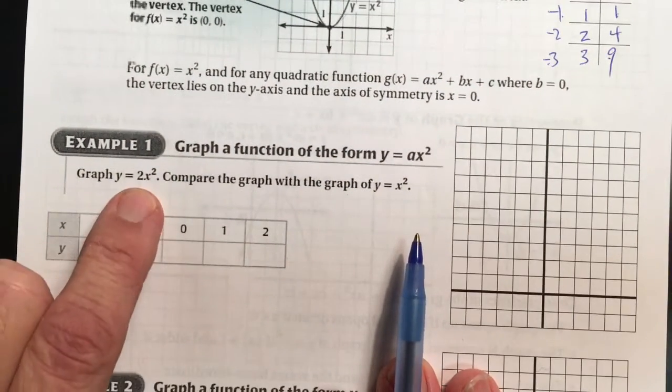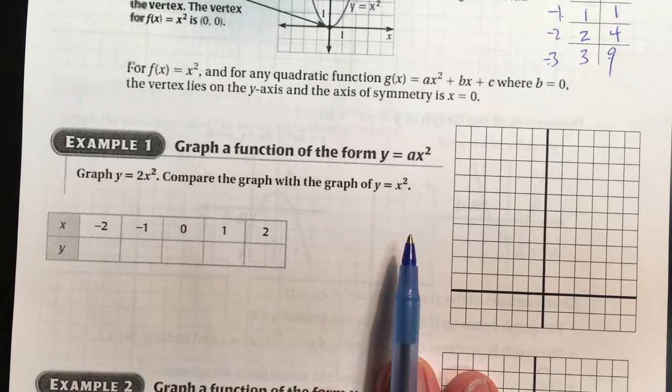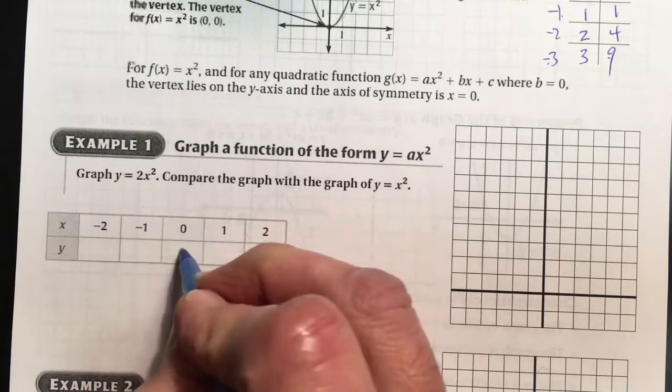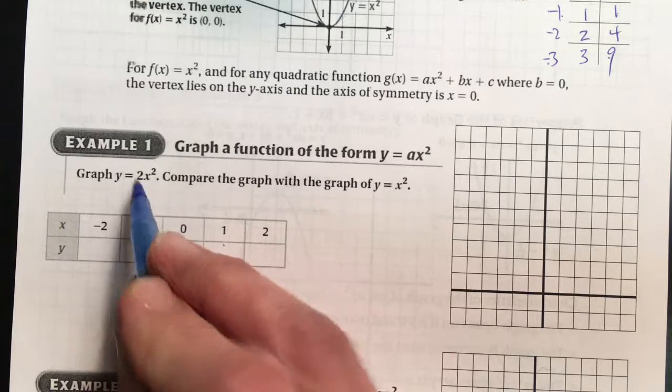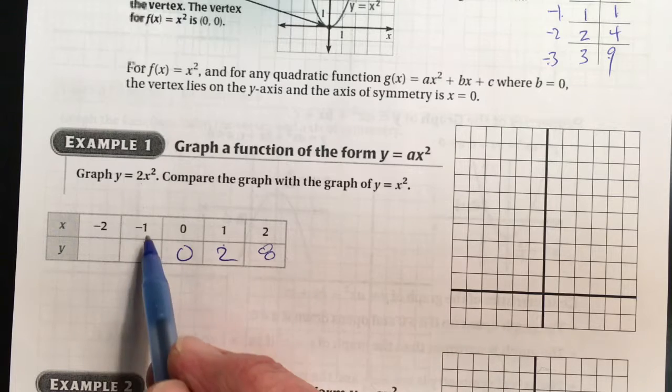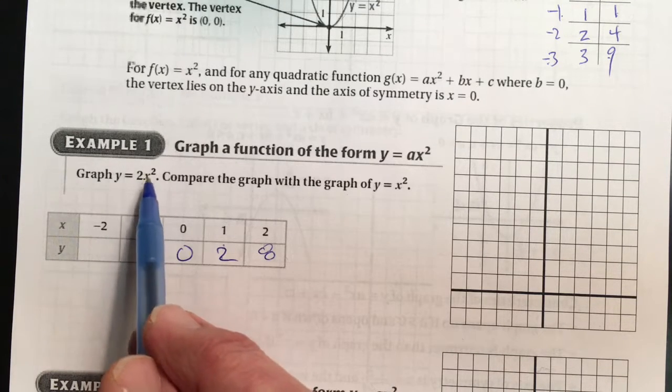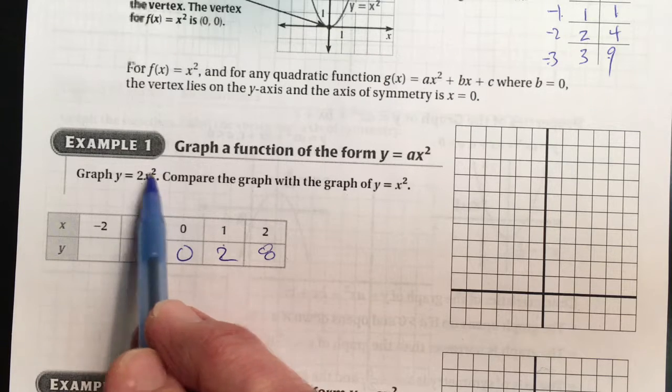Example 1 is y = 2x squared. So we have a table and just fill the values in. 0 squared is 0, 1 squared is 1 times 2 is 2, 2 squared is 4, 4 times 2 is 8. Likewise, negative 1 squared is 1 times 2 is 2. Negative 2 squared is positive 4, 4 times 2 is 8.